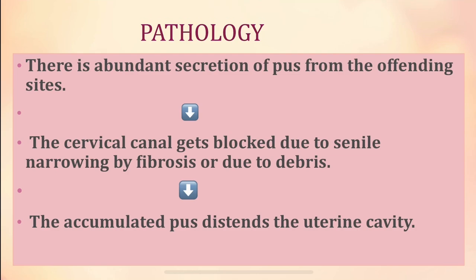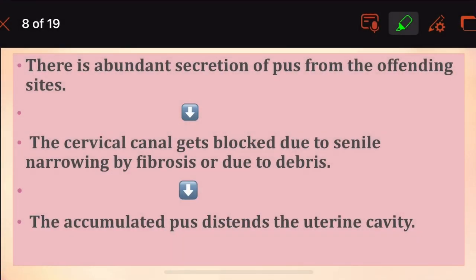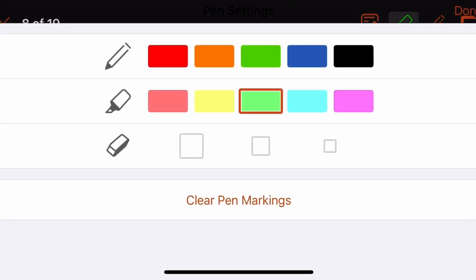What is the pathology? How does pyometra occur? There is abundant secretion of pus from the offending site, and once this pus is accumulated, there is blockage and occlusion in the cervical canal. This accumulated pus will then ascend into the uterine cavity. The cervical canal gets blocked due to senile narrowing — as old age occurs, there will be narrowing, which can also occur by scarring, fibrosis, or debris. The accumulated pus is ascending upwards.